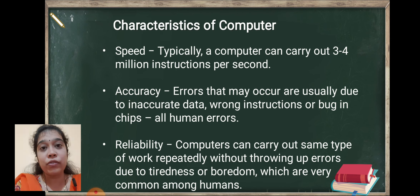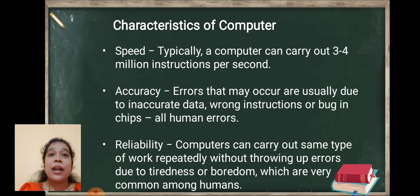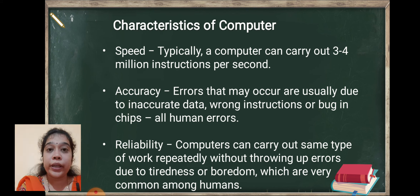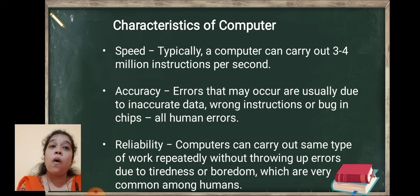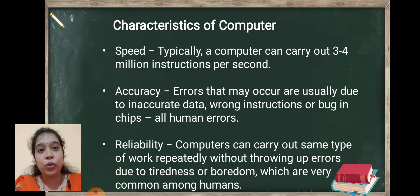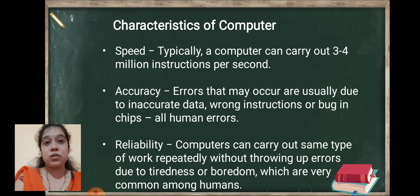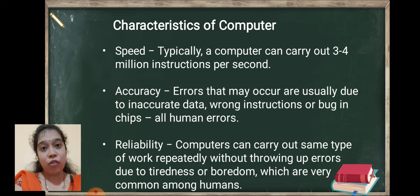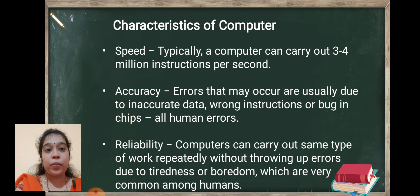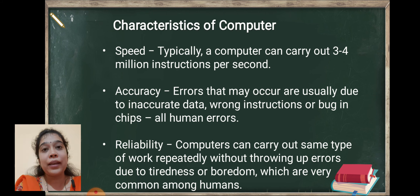Second is accuracy. As we know, maximum operations and calculations of the computer are accurate. If some errors are found, those errors are due to either inaccurate data entry, wrong instructions, or bugs in the chip — that means due to human errors only. Otherwise the computer performs accurate operations.